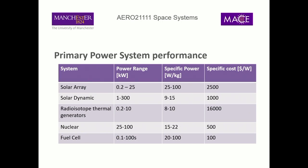Solar dynamic systems can achieve much higher power ranges potentially, but have a bit lower power-per-kilogram because you need all sorts of mechanical components — bearings and other parts — that you wouldn't need with a purely electrical system. Their specific cost, the cost per watt, is a bit lower though, which is potentially a good advantage.